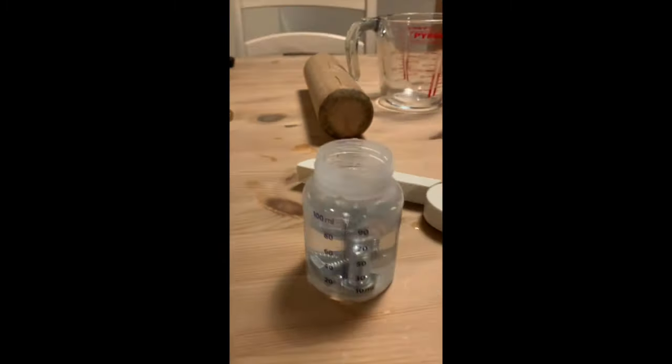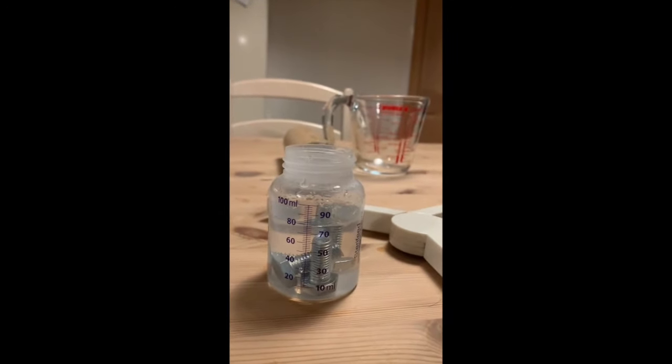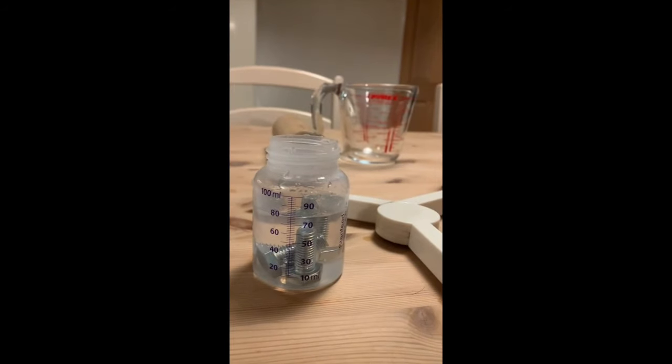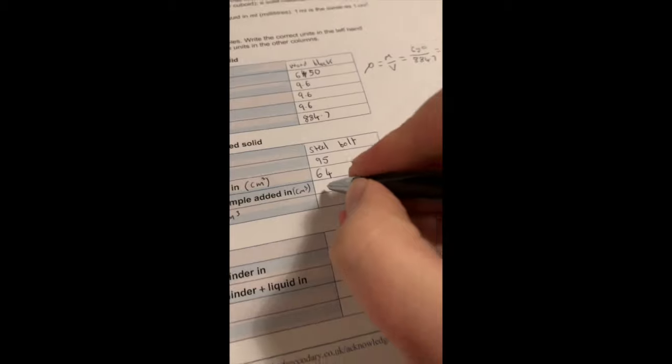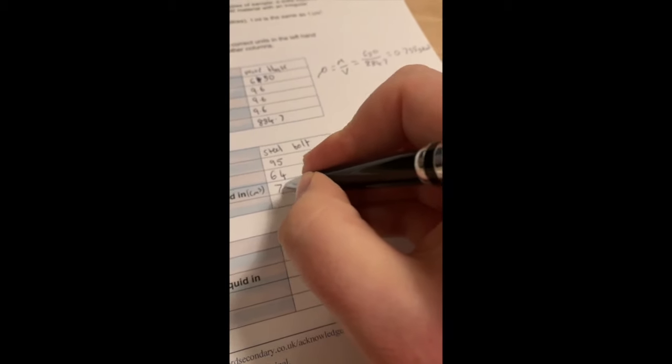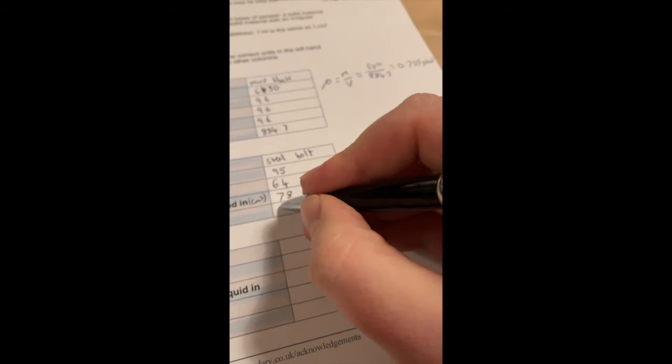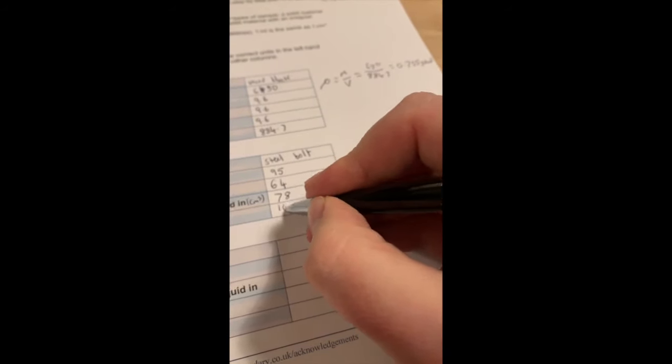And the sample then is, once I've added the sample, I'm on 78, reading from the bottom of the meniscus, like a good chemist or scientist, because I guess I'm doing it now in physics, so it's physics as well, isn't it? And 78. And so the volume of the sample will be this, take away this, 14 centimeters cubed.